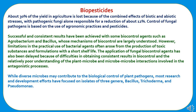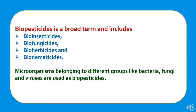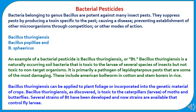While diverse microbes may contribute to the biological control of plant pathogens, most research and development efforts have focused on isolating three genera: Bacillus, Trichoderma, and Pseudomonas. Biopesticides is a broader term which includes bio-insecticides, bio-fungicides, bio-herbicides, and bio-nematicides. Microorganisms belonging to different groups like bacteria, fungi, and viruses are used as biopesticides. Now we will study about bacterial pesticides.